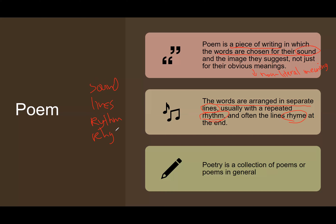So the keywords to remember when defining a poem are: sound, lines, rhythm, and rhyme. The words are chosen based on sound to represent non-literal meaning, arranged in lines, and usually have rhythm and rhyme. What is the difference between poem and poetry? A poem is the piece of writing itself, while poetry is a collection of poems in general — for example, poetry from a certain era or poetry written by John Donne.